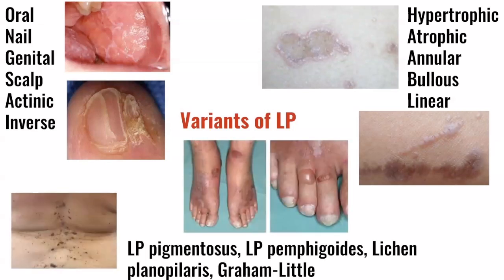A third broad group includes other variants such as lichen planus pigmentosus, which has a darker appearance, lichen planus pemphigoides, lichen planopilaris which involves the scalp, and some lesser-known ones including Graham Little-Picardi-Lasseur syndrome.